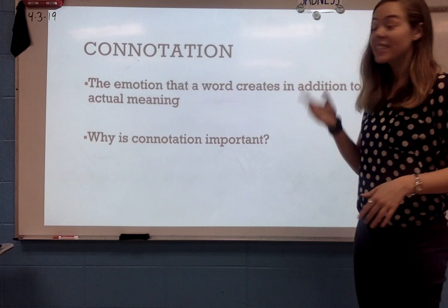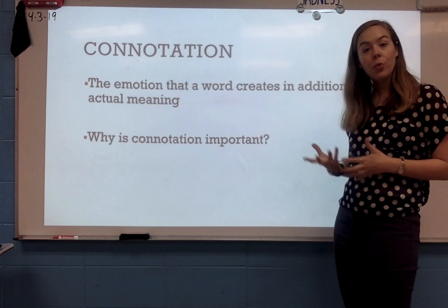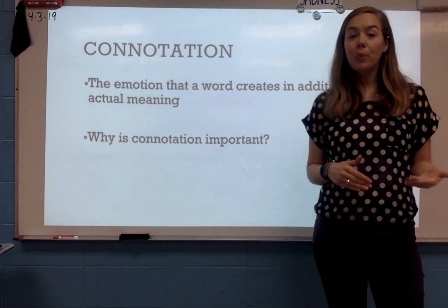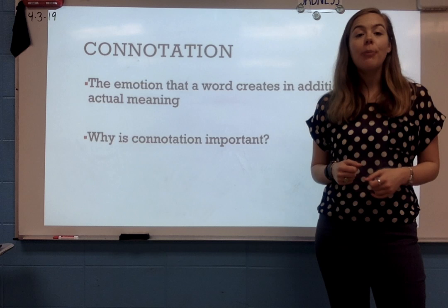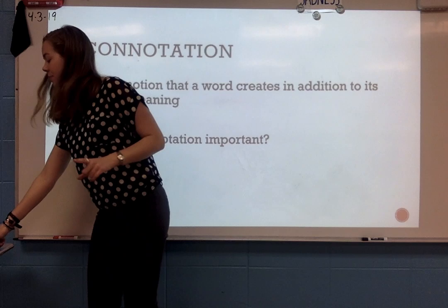Okay guys, day four of flip circles. We are on our way. The skill you're working on today is connotation. Now I don't know if you will have heard this word before. This means the emotion that a word conveys in addition to its actual meaning. So we can look up a word in the dictionary and know what it means, but words also have emotions that go with them. You want to know the connotation of a word because it helps you interpret the description you're hearing about.